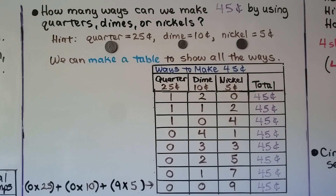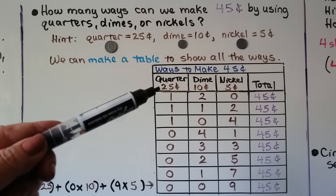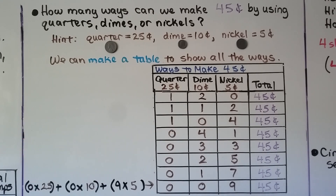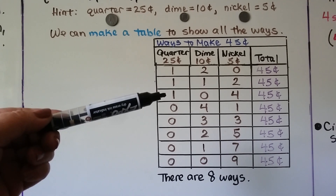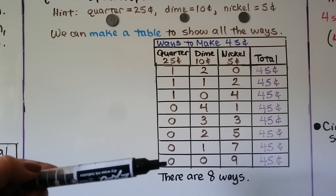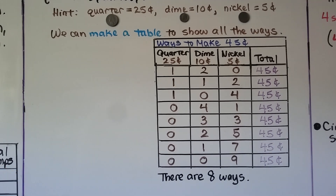And finally, we can do zero quarters and zero dimes, and just use nine nickels — that equals 45 cents: zero times 25 cents, plus zero times 10 cents, plus nine times five cents, to equal 45 cents. We took the value of each coin and multiplied it by how many coins we had, then added them all together. We count the rows on our table — there are eight ways that we can make 45 cents by using quarters, dimes, or nickels.